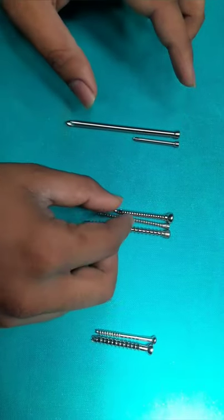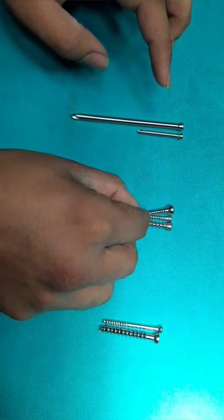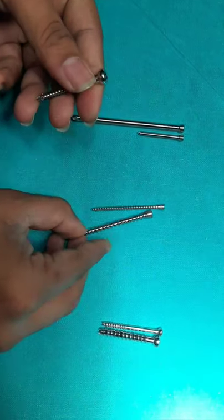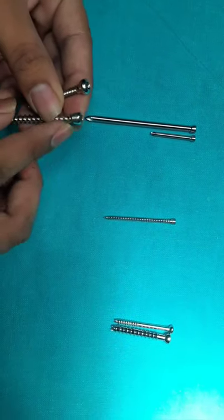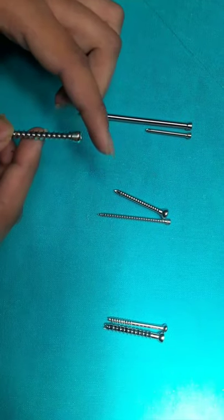Now we are discussing cancellous screws. Cancellous screws also have a simple head and this is the locking head. They are also called wood type screws.